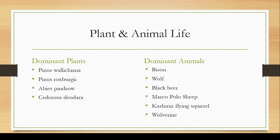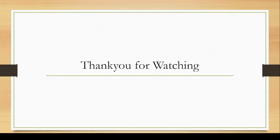The dominant plants inhabiting the coniferous alpine and boreal forest are Pinus wallichiana, Pinus roxburghii, Abies pindrow, and Cedrus deodara. The dominant animals are bison, wolf, black bear, Marco Polo sheep, Kashmir flying squirrel, and wolverine. If you are looking for the second part covering the grassland ecosystem, desert ecosystem, tundra ecosystem, and freshwater ecosystem, stay tuned — we will be describing each in the next video. Thank you for watching everybody.